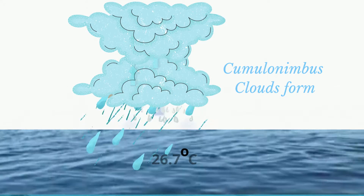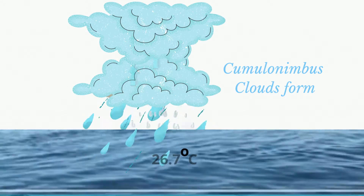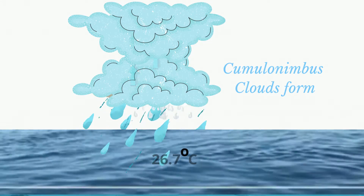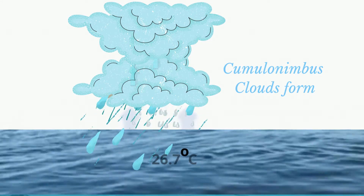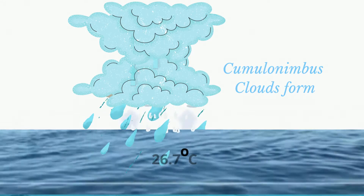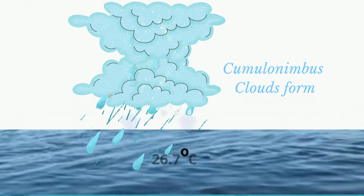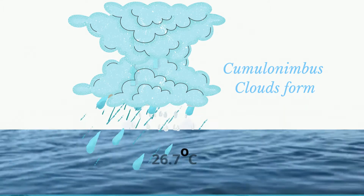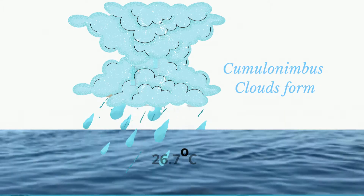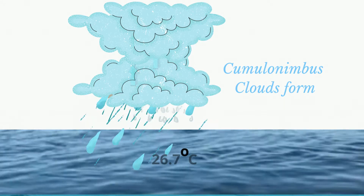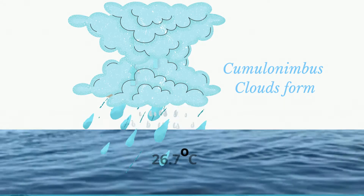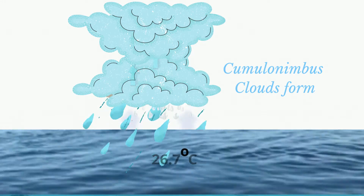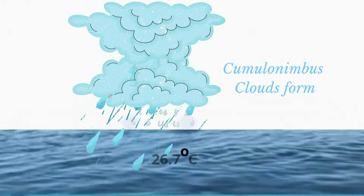The heat results in further air rising, which leads to further cooling and condensation, and which in turn causes the cumulus clouds to grow even higher to form towering cumulonimbus clouds, which produce very heavy rainfall and even thunderstorms.